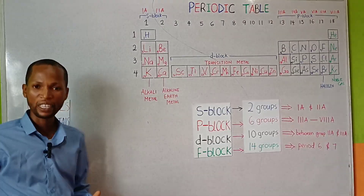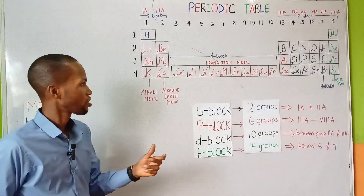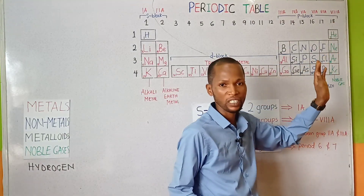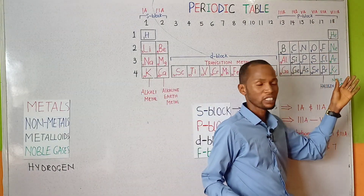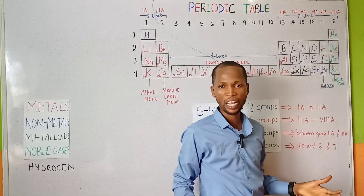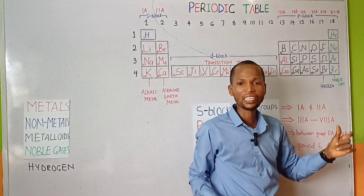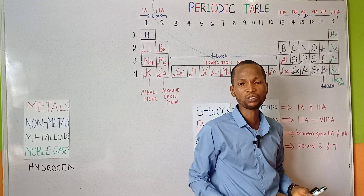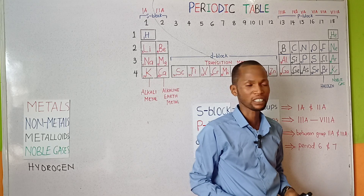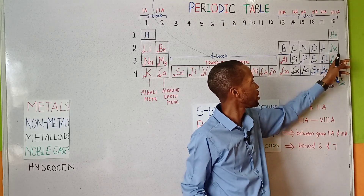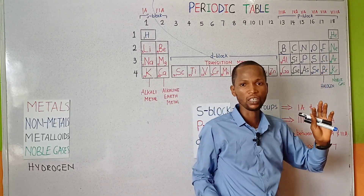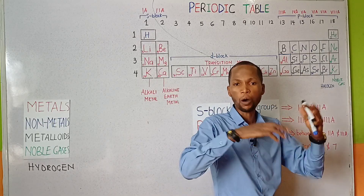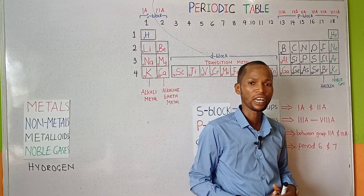The noble gases, also known as rare gases or inert gases, are found in group 18 or group 0 of the periodic table. Under standard conditions, they are odorless, colorless, monoatomic gases which have very low reactivity — in some cases, they are said to be unreactive gases. The elements include helium, neon, argon, and krypton. They have attained their duplet or octet structure, meaning they have completed their outermost shell electrons.